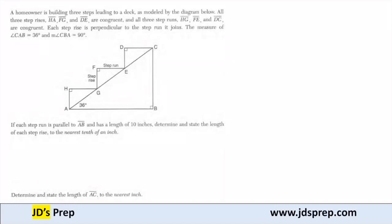In this example, a homeowner is building three steps leading to a deck as modeled by the diagram. All three step rises HA, FG, and DE are congruent.